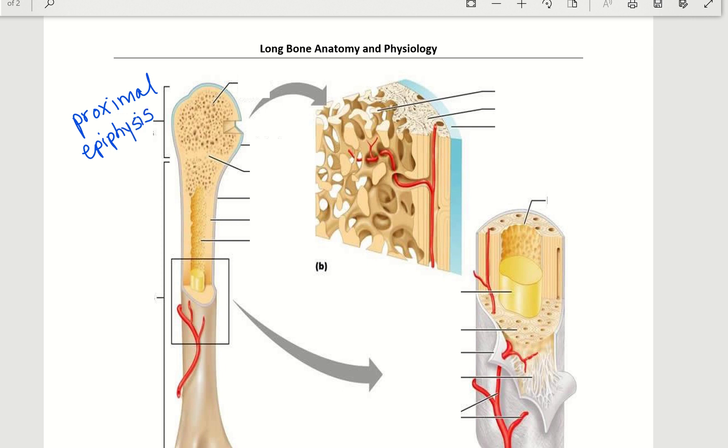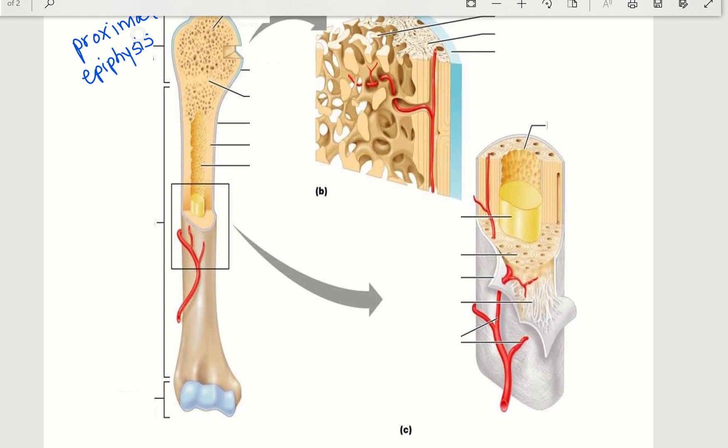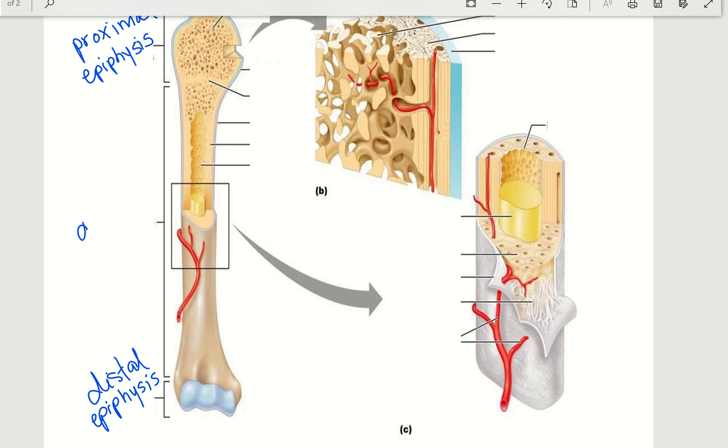On the opposite end, if this one is proximal, we know that the elbow end is going to be the distal epiphysis. And then the center or the shaft of the long bone is what we refer to as the diaphysis.